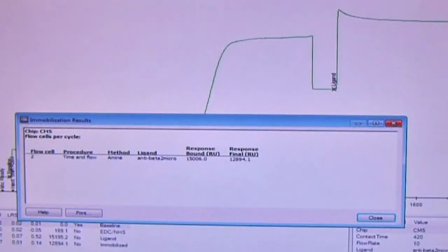We will now look at the results of our anti-beta-2 microglobulin immobilization performed on a CM5 chip. Looking at the immobilization results dialog box, there are two response levels calculated from the sensorgram. The response bound which represents the amount of ligand bound to the surface after ligand injection. Whereas the response final represents the amount of ligand covalently bound to the surface. So here, as we observe, 12894 RU of anti-beta-2 microglobulin immobilized on the surface of the chip.